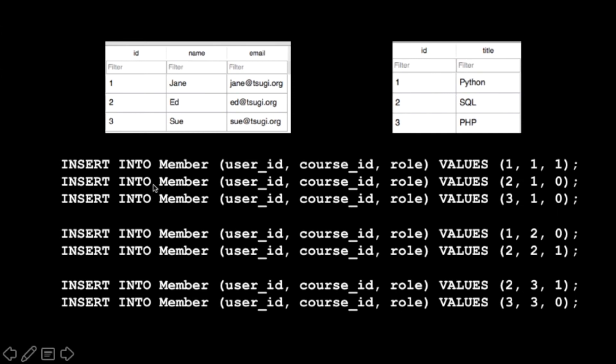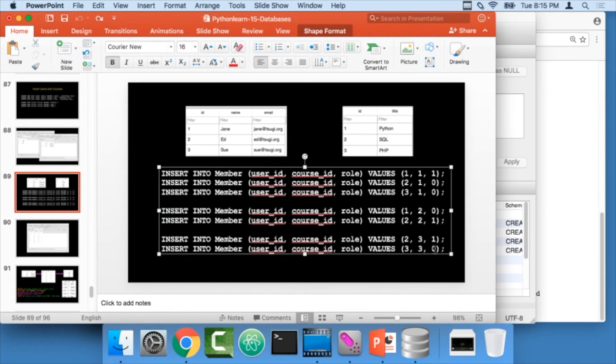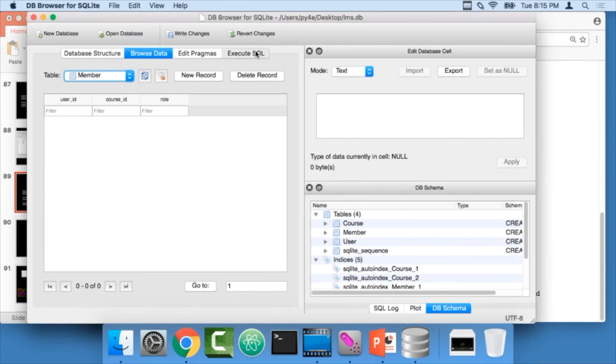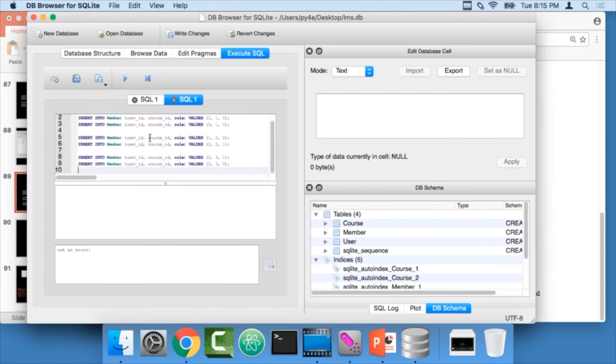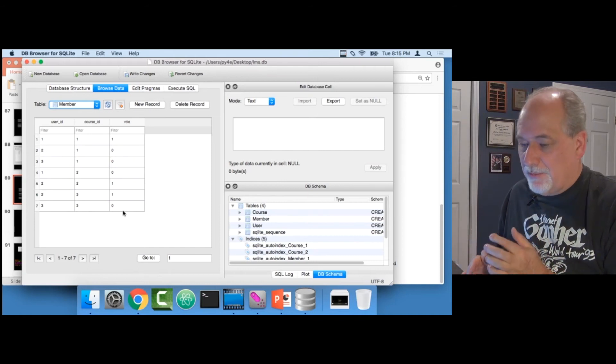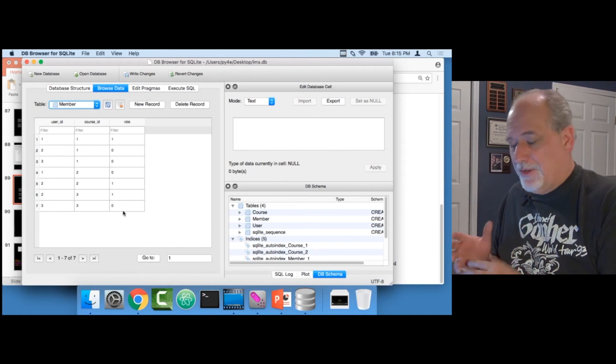If you look at these numbers, user ID, course ID role - user ID one is in course one as the teacher. User ID two is in course one as the student, et cetera, et cetera, et cetera. I'm making these connections by just putting these little numbers in. Conveniently, I have all my semicolons perfectly in place. So I go to SQL and then I run that. Then I take and I look at my membership data. There it is - two foreign keys and a bit of data modeled at the connection. The role is modeled at the connection.